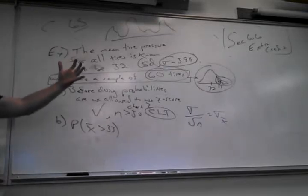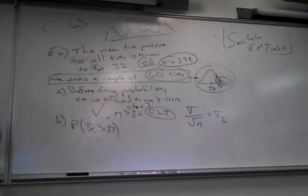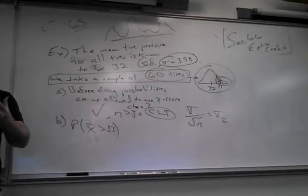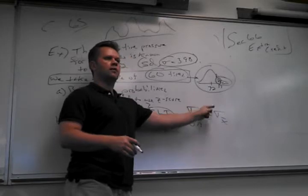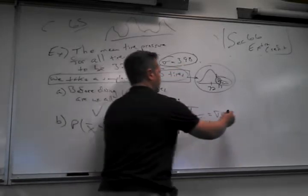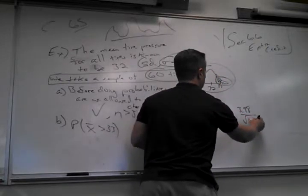It's still a population standard deviation — I'm not changing it into a sample standard deviation. This is the standard deviation for individuals. Divided by the square root of n, it becomes the standard deviation for groups of size 60. It's still the population of all possible samples of size 60.